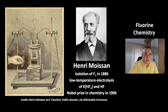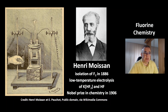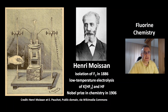Henri Moissan isolated elemental fluorine for the first time in 1886 by low-temperature electrolysis of potassium bifluoride and hydrogen fluoride. For this accomplishment, he received the Nobel Prize in Chemistry in 1906. At the left side there is a drawing of his apparatus.